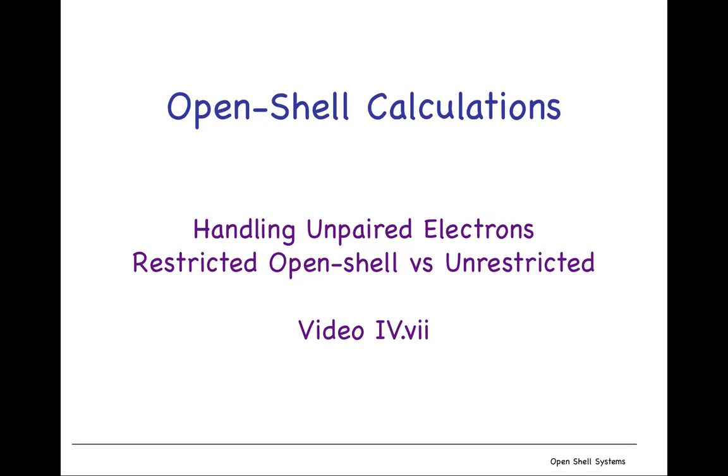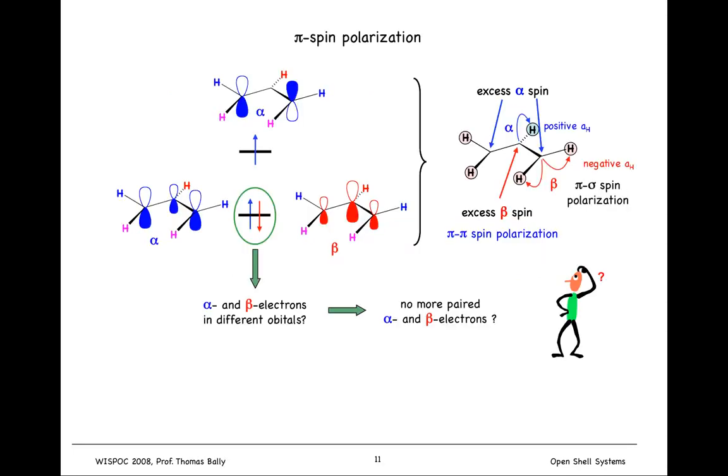Now we're going to look at the implications for doing calculations in open shell systems. This is just to remind you of the situation where the doubly occupied pi 1 orbital is polarized by the singly occupied orbital, and moreover each of those orbitals then polarizes sigma orbitals for CH bonds, and there's polarization throughout the molecule.